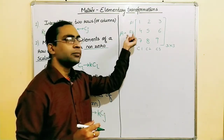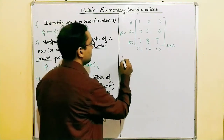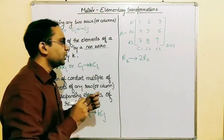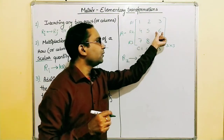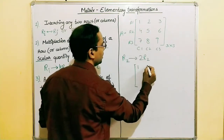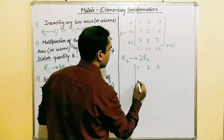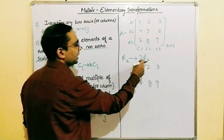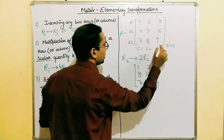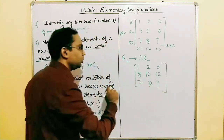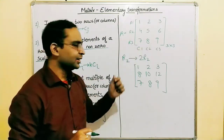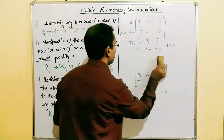R2 is changed to 2·R2, meaning we multiply each element of R2 by two. R1 remains one, two, three and R3 remains seven, eight, nine. The elements of R2 become: four times two is eight, five times two is ten, and six times two is twelve. This new matrix is equivalent to the original matrix.